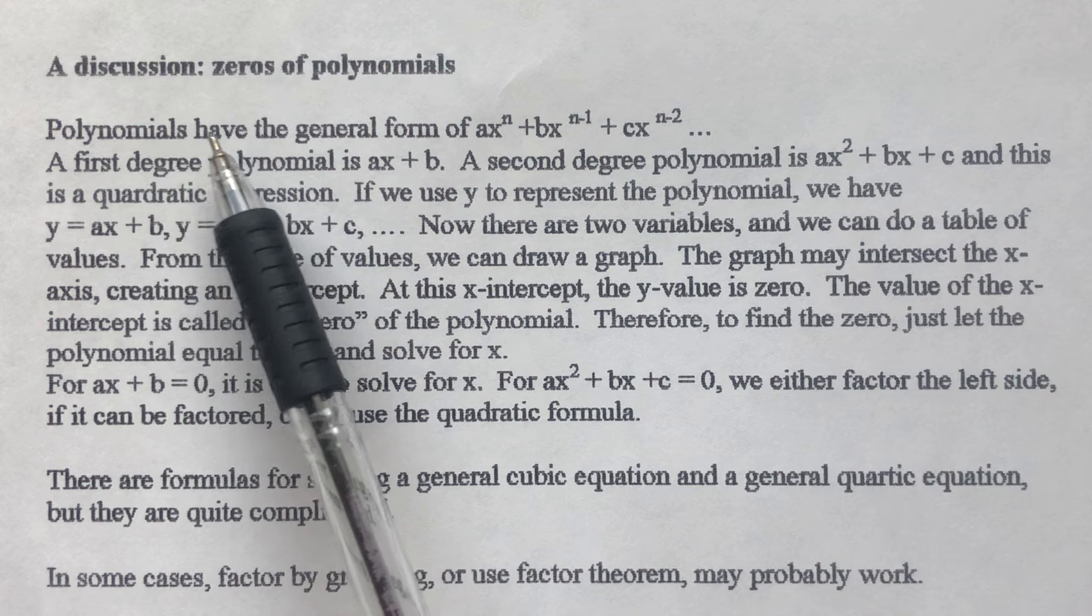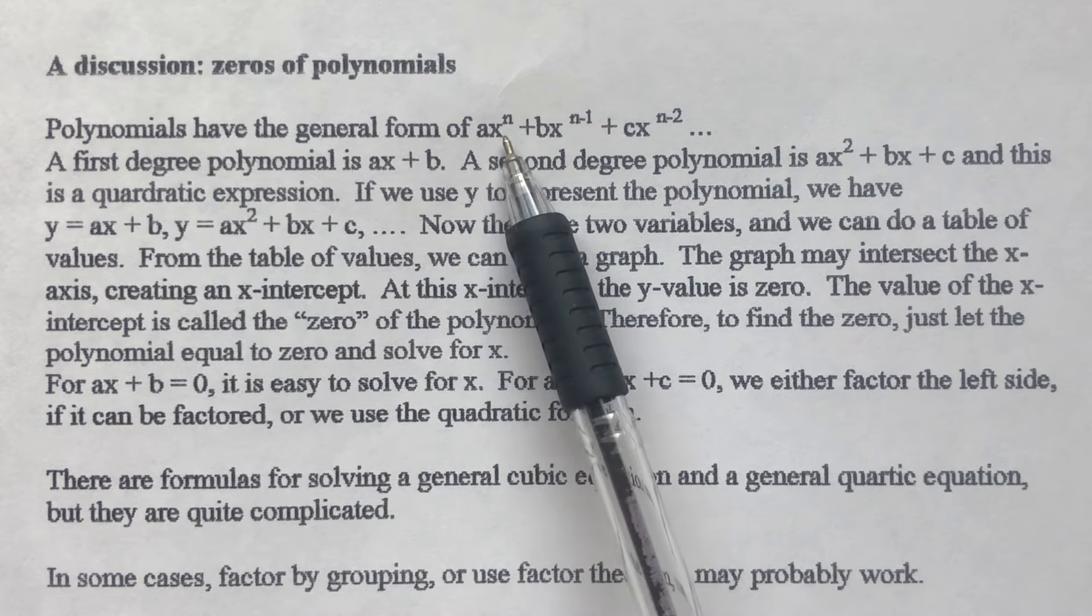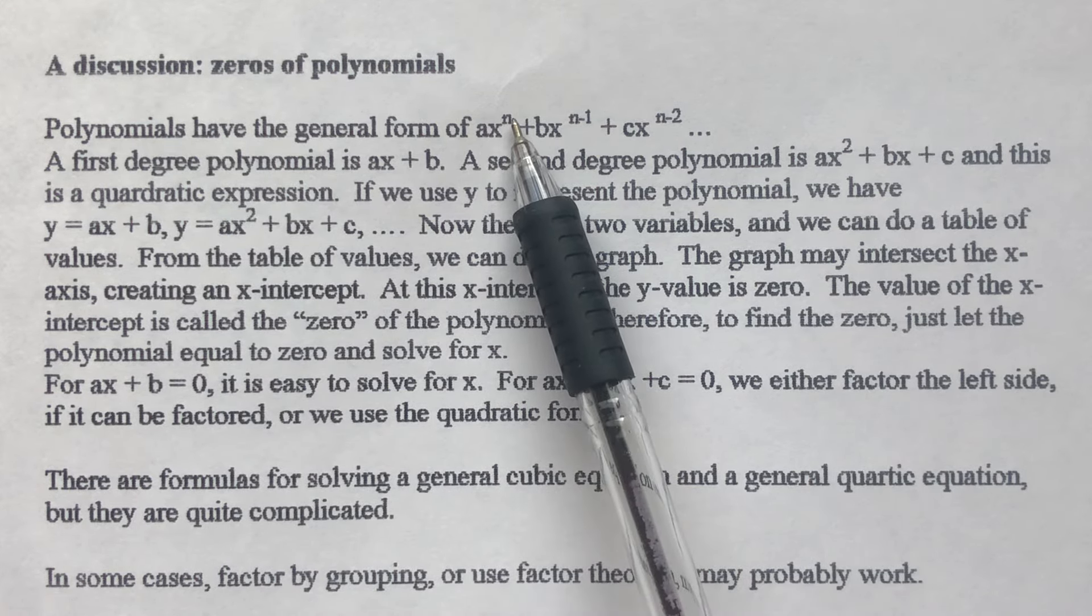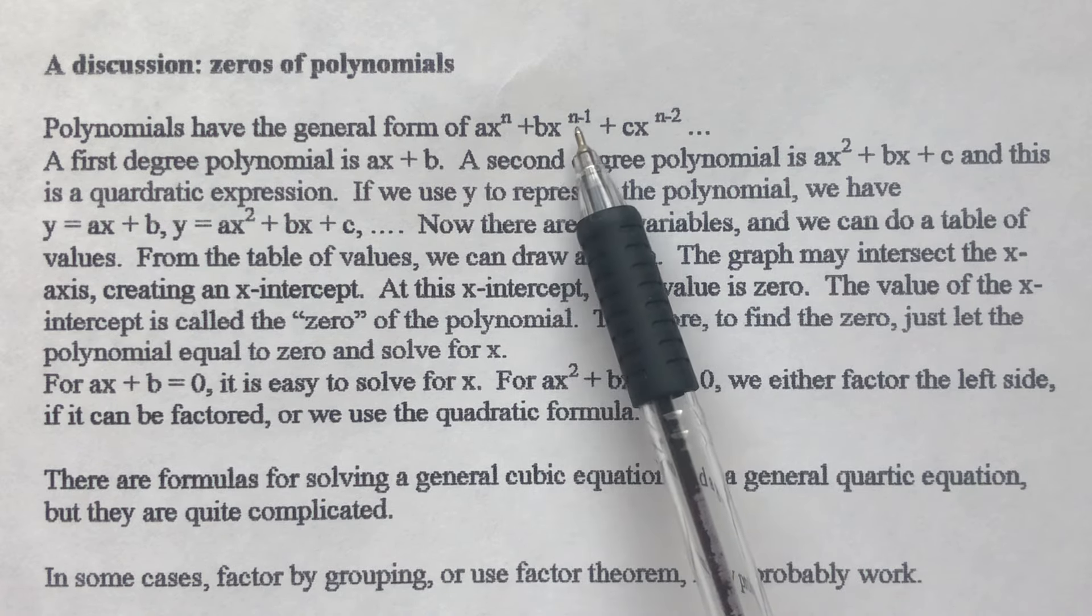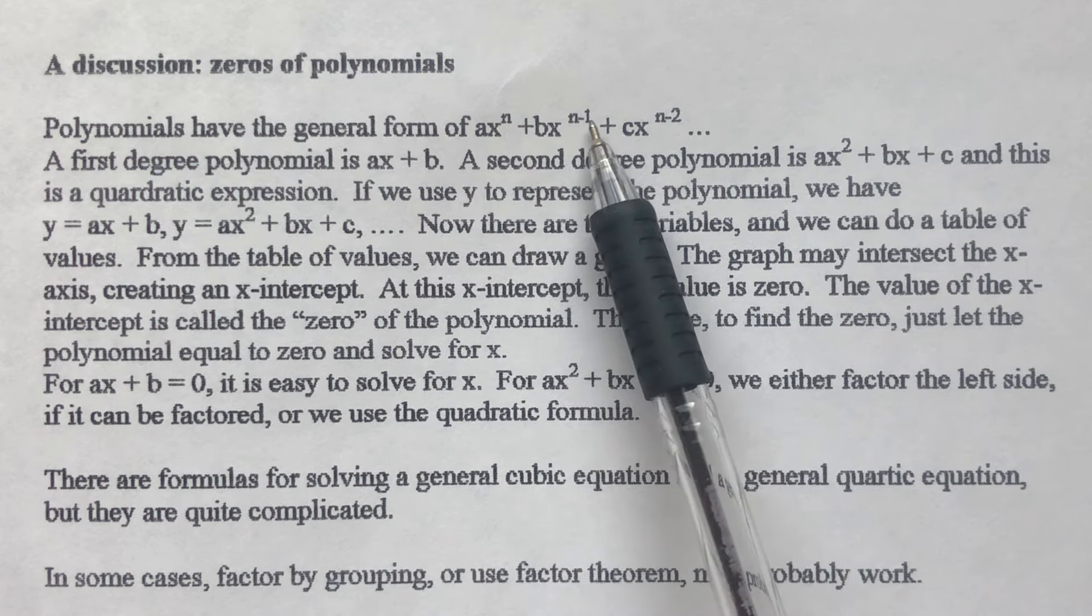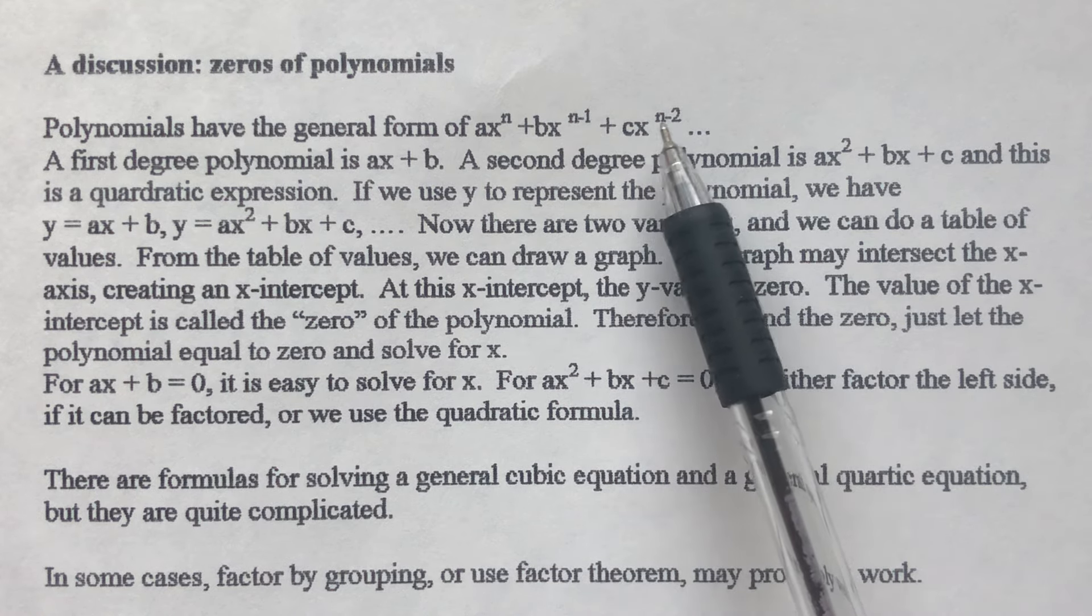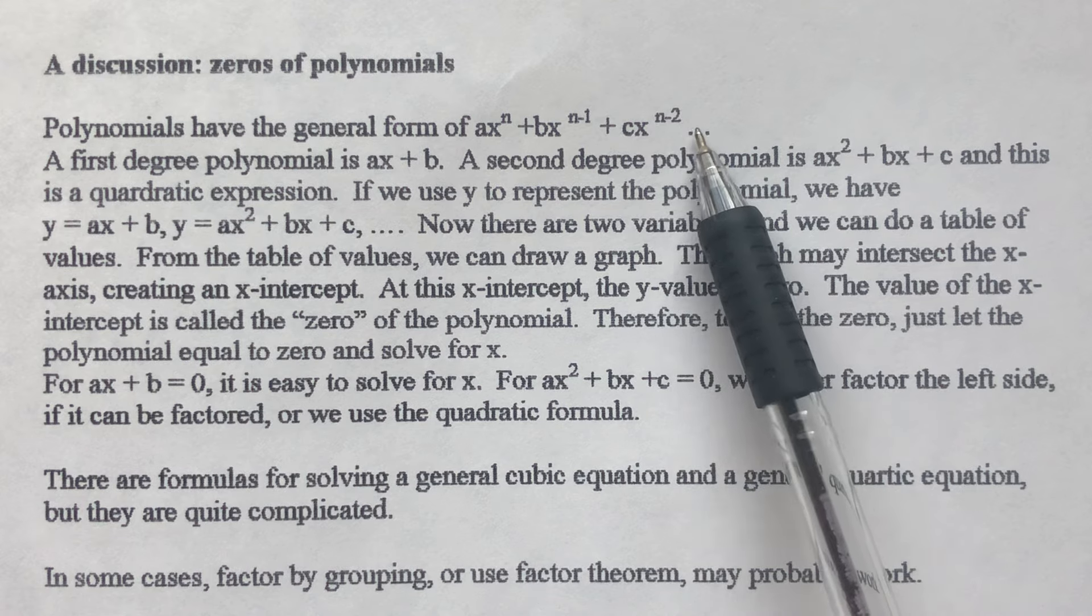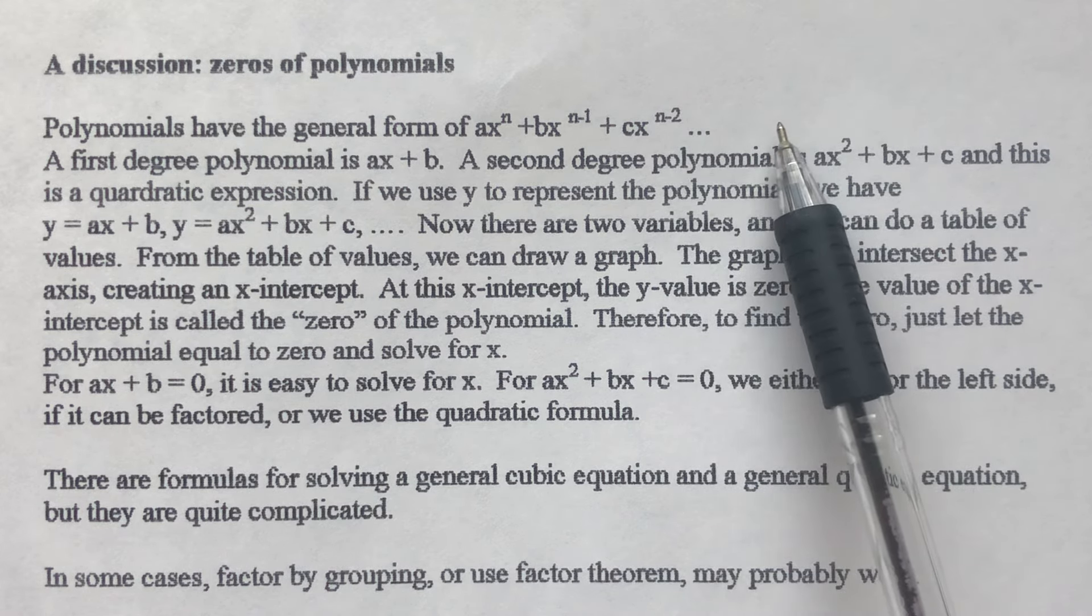Polynomials have the general form of ax to the exponent n plus bx to the exponent n minus 1 plus cx to the exponent n minus 2 and so on. This is a polynomial.